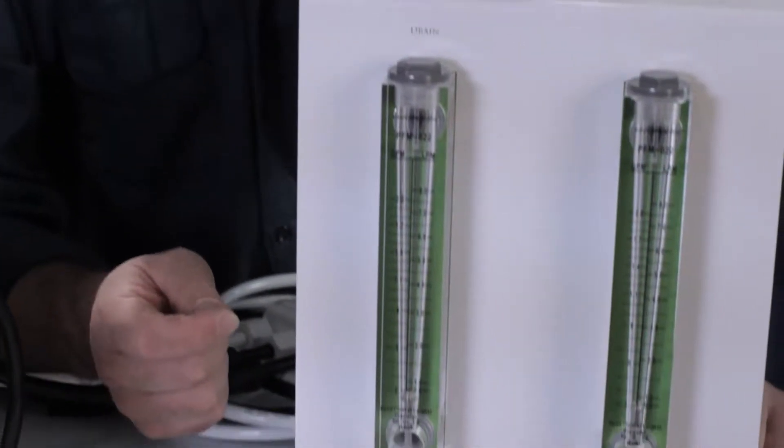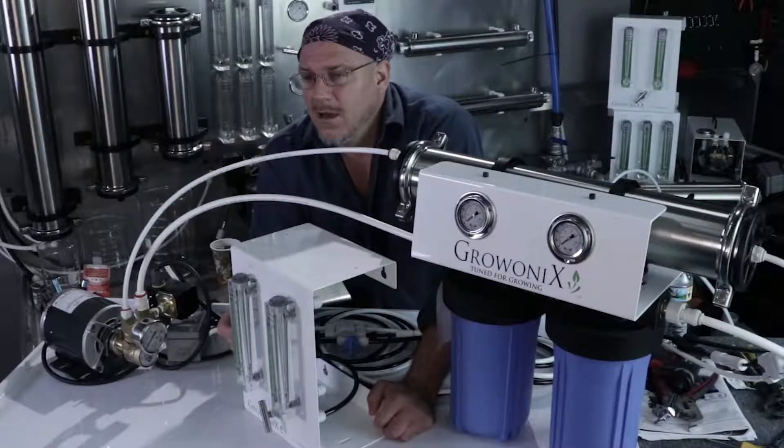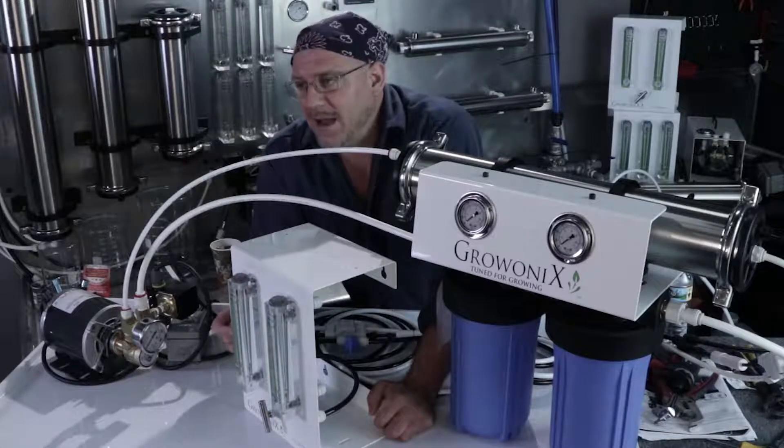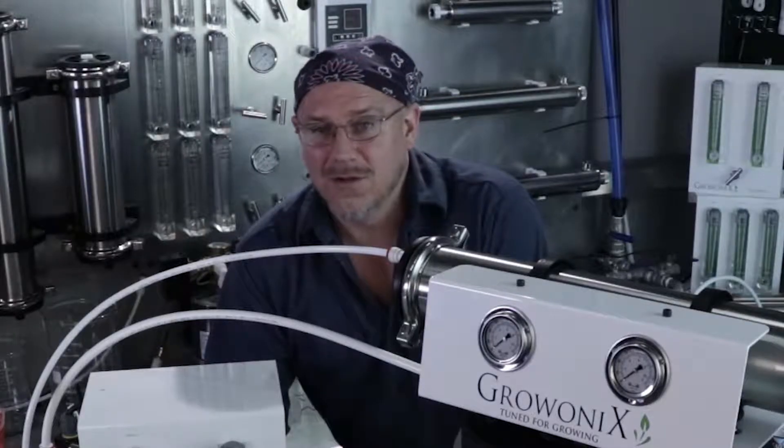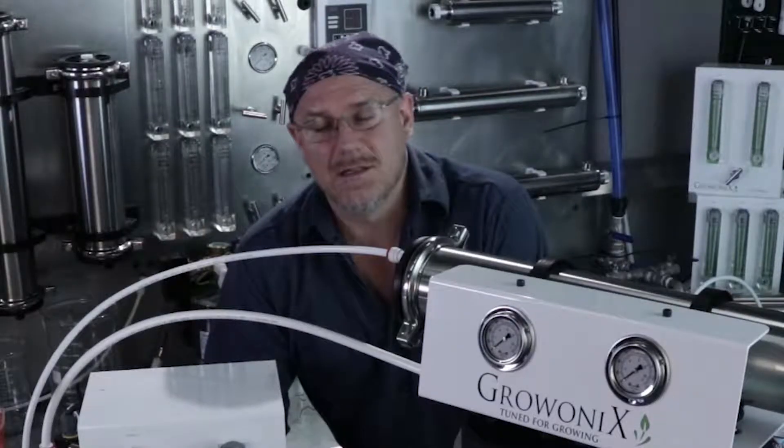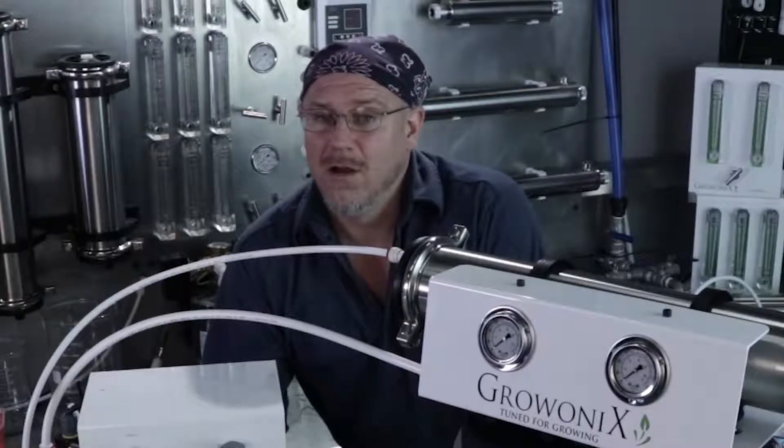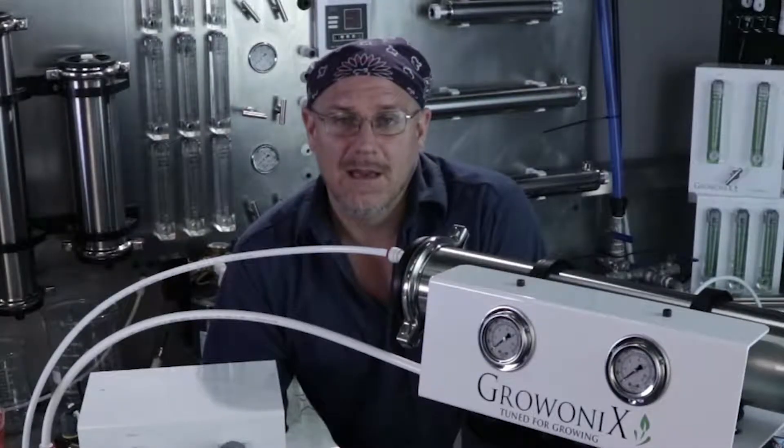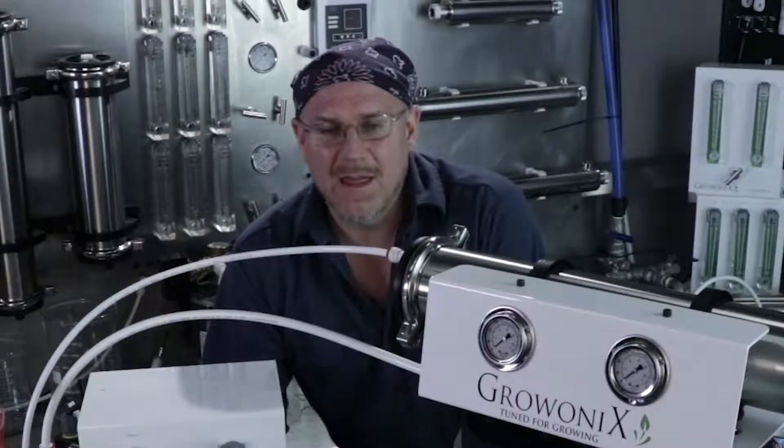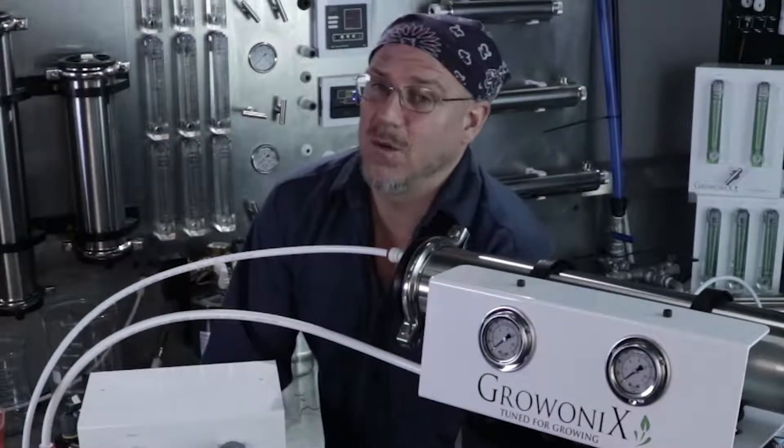So now a system that was making 1.3 gallons a minute, a year later is making 0.5 gallons a minute. Now you might not notice that if you're filling up a large reservoir tank, say 1000 gallons. You might know that it used to take 12 hours to fill this tank, now it's taking 18 hours to fill this tank. That might be your only measure.